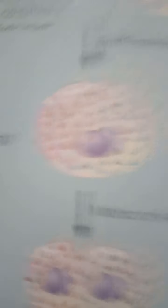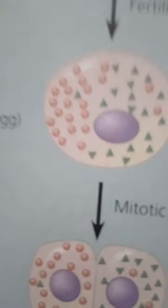We will explore this question in the context of pattern formation — the development of a spatial organization in which the tissues and organs of an organism are all in their characteristic places. In the life of a plant, pattern formation occurs continually in the apical meristems.